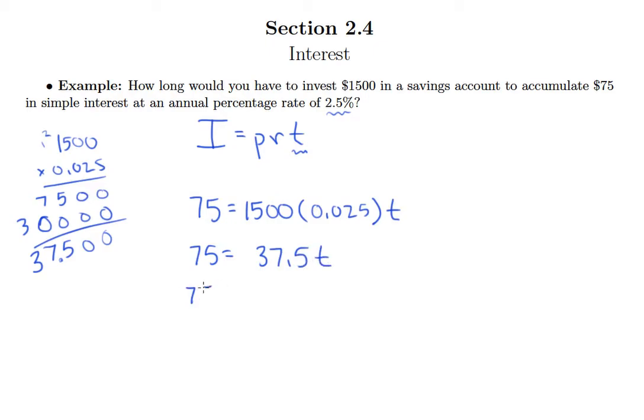And then we can divide both sides by 37.5. Cancel those out, and you might even notice here that 37.5 is exactly half of 75.